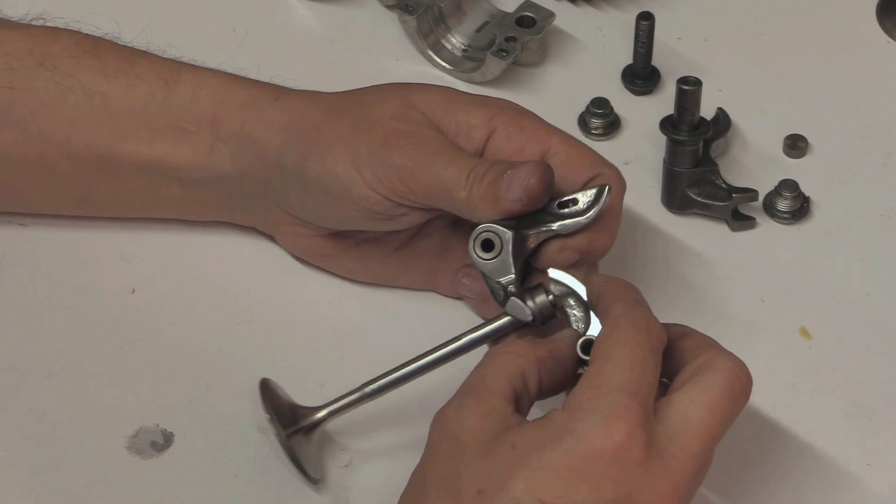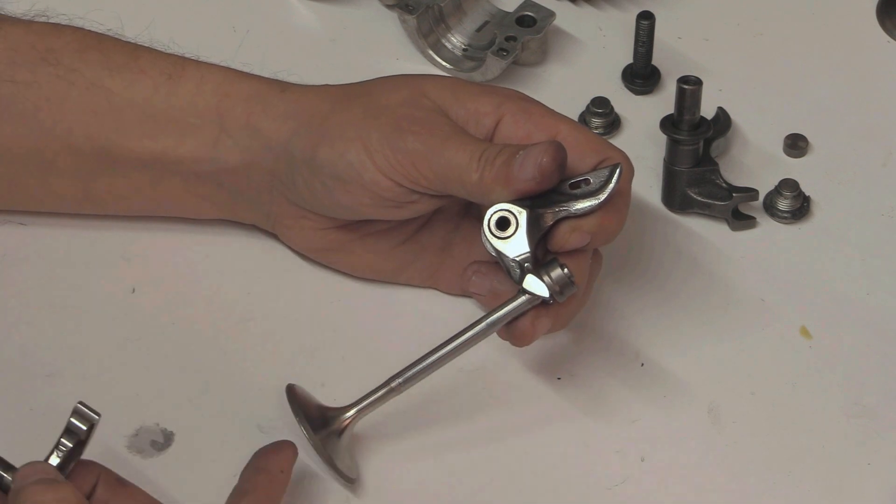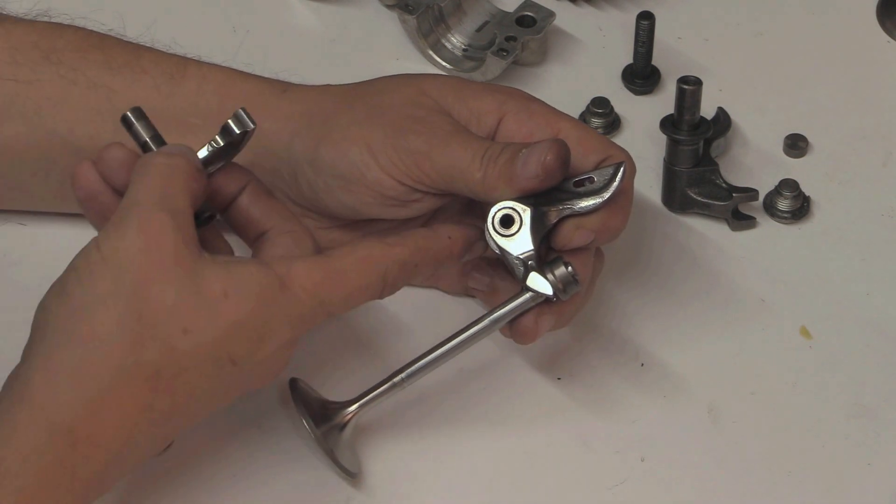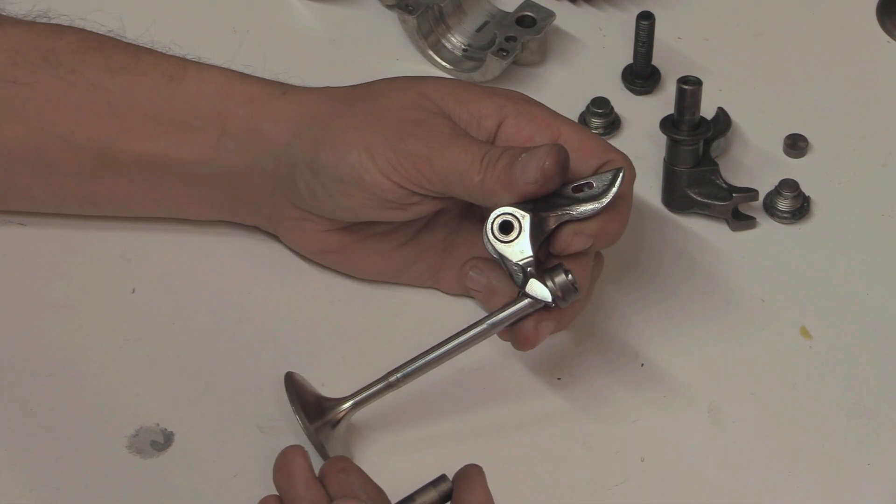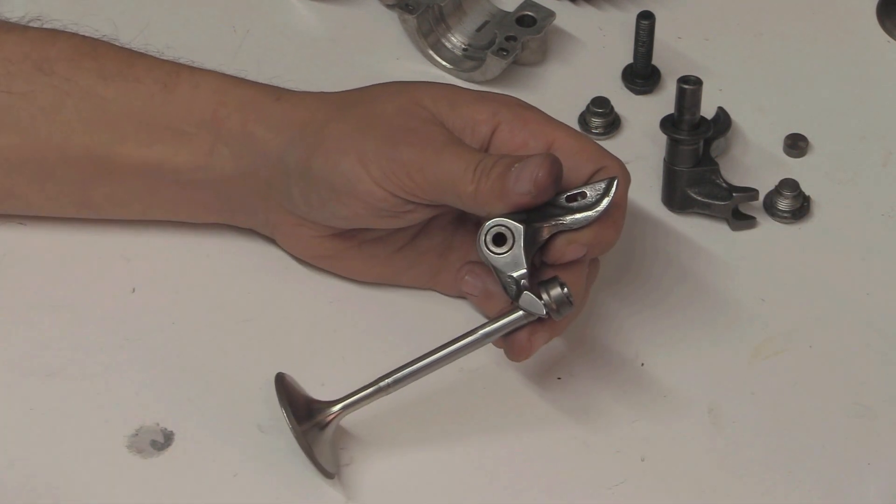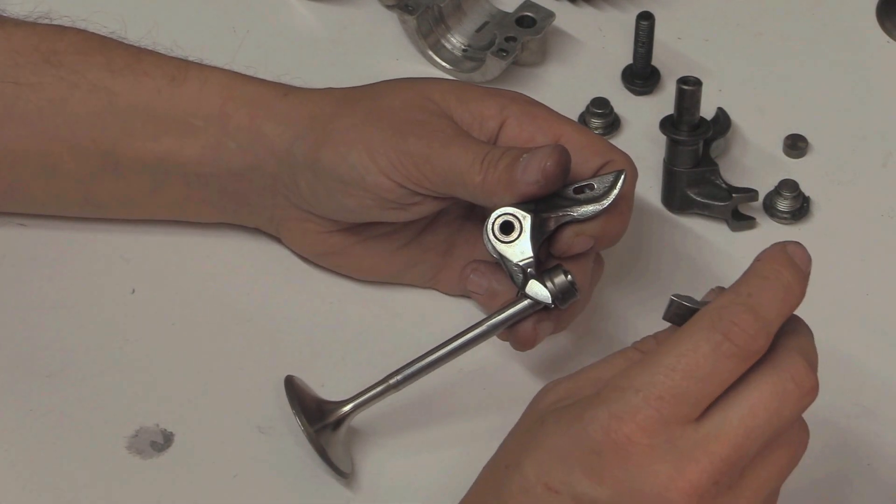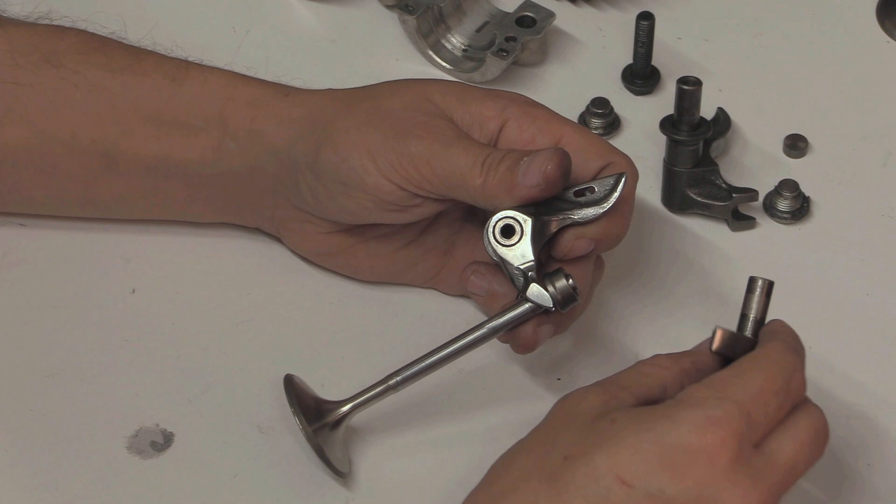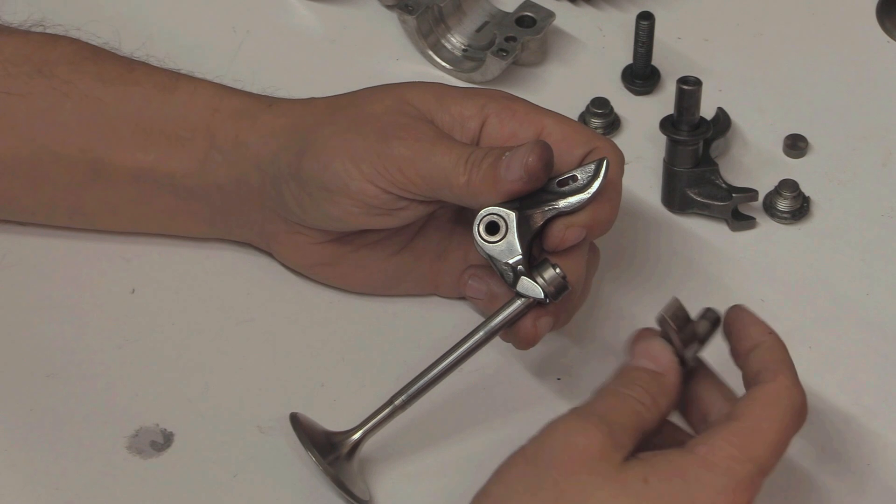When this cam actuates the finger follower, it's actually fighting not only the inertia of the valve but also the tension in this spring. So there is a slight loss there, but then people are going to start going on about return losses through springs. We'll get to that - I need to do a setup for that because that's a bit technical. But you can basically see how this works.